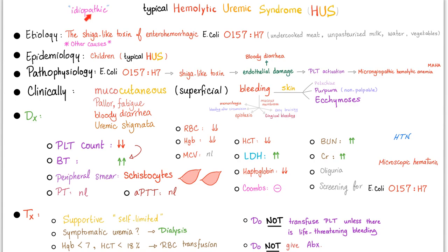For typical HUS, the etiology is the Shiga-like toxin of enterohemorrhagic E. coli O157:H7, associated with undercooked meat, unpasteurized milk, water, and raw vegetables. This is typical HUS. Epidemiologically, it affects children. Pathophysiology: E. coli produces a Shiga-like toxin — not Shiga toxin — which causes endothelial and epithelial damage, leading to bloody diarrhea. The endothelial damage leads to platelet activation and microangiopathic hemolytic anemia.